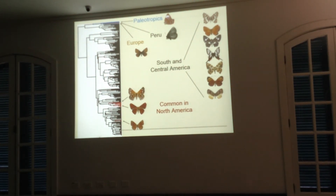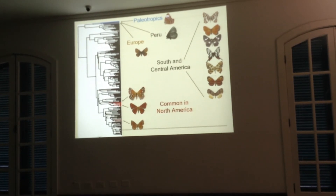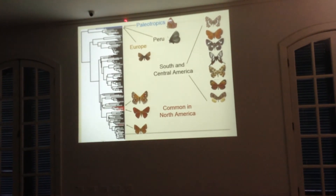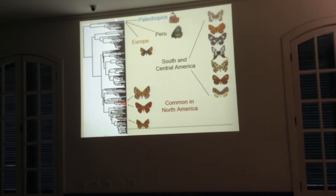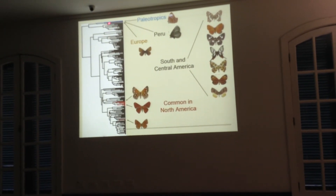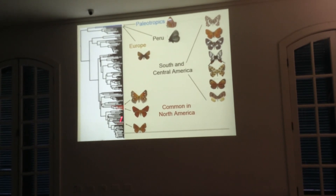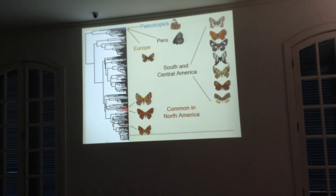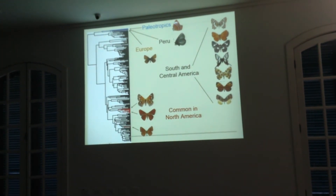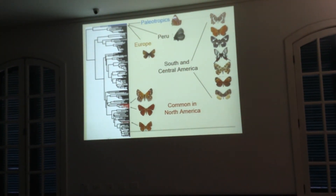Regarding geographic distribution: we have a clade mainly from South and Central America, predominantly South America. We have one European lineage in the middle of other paleotropical lineages, one European butterfly, and one North American butterfly. The distribution pattern is complex, and I am still working out how to code these areas for the biogeographical distribution analysis.